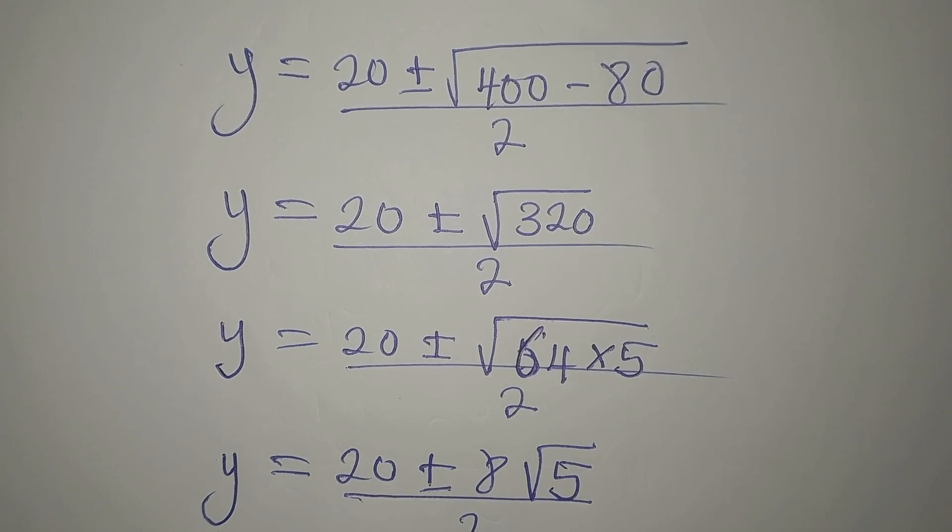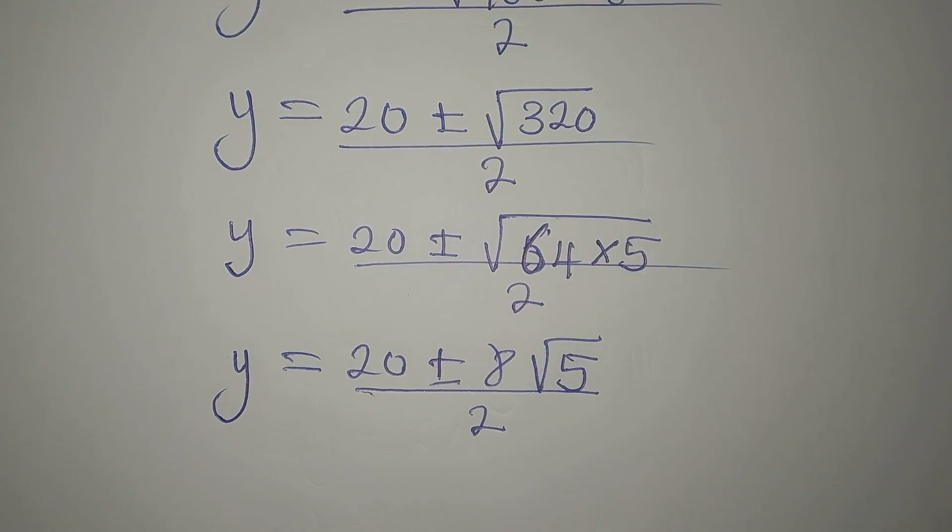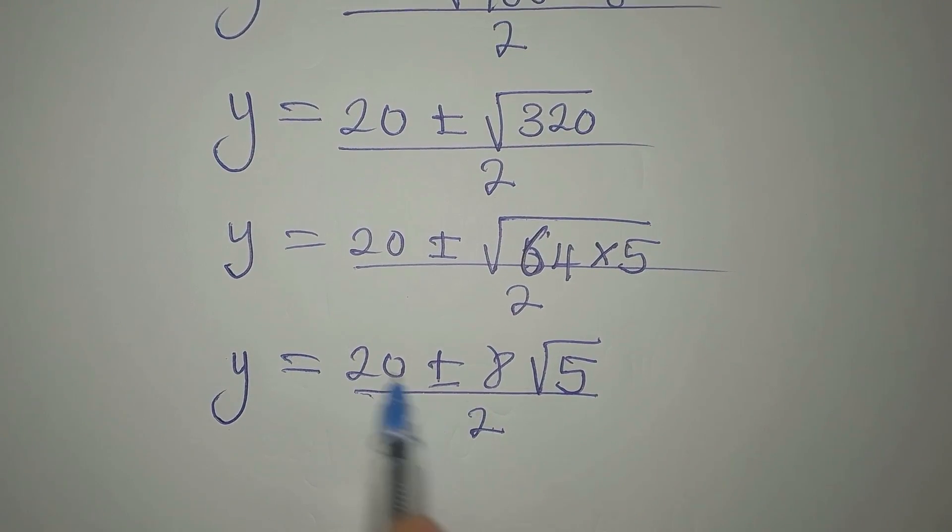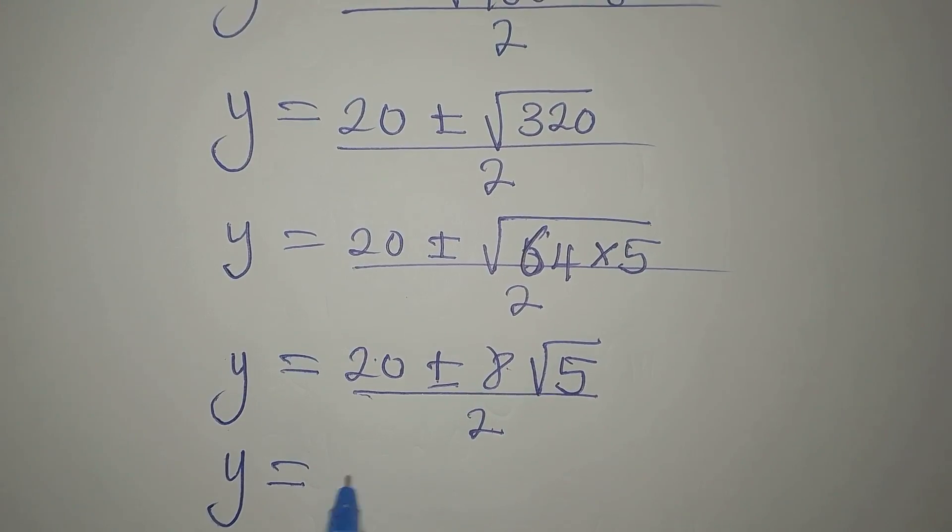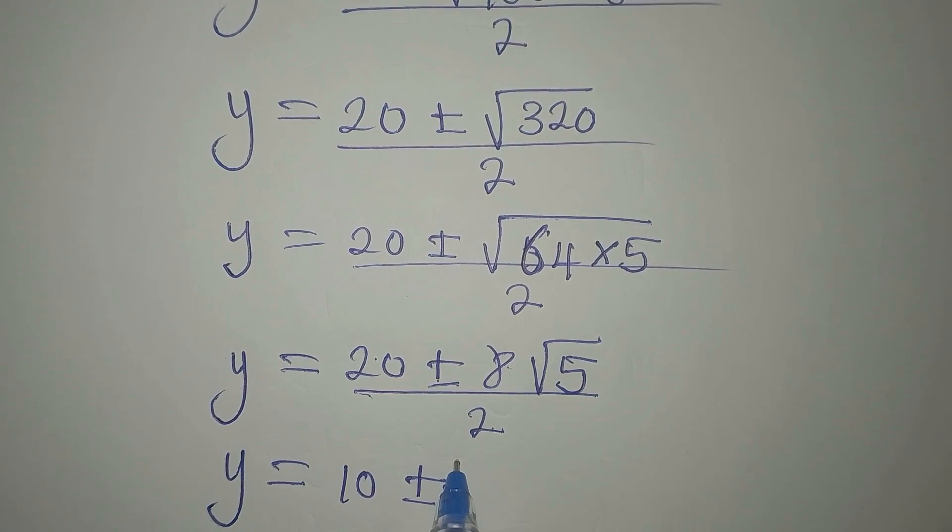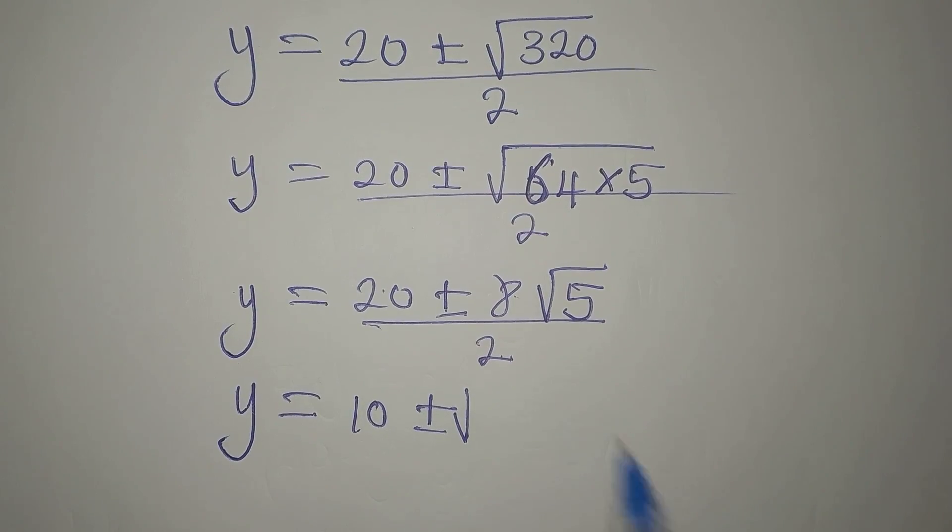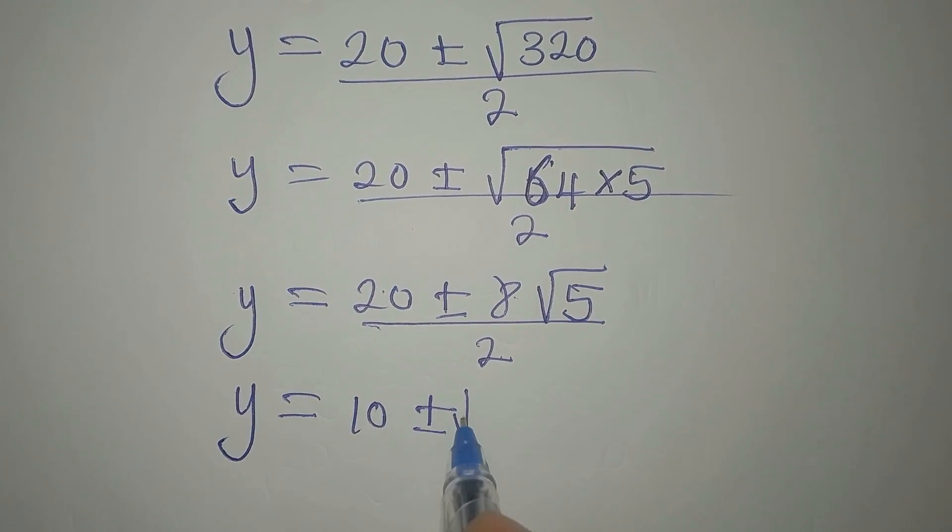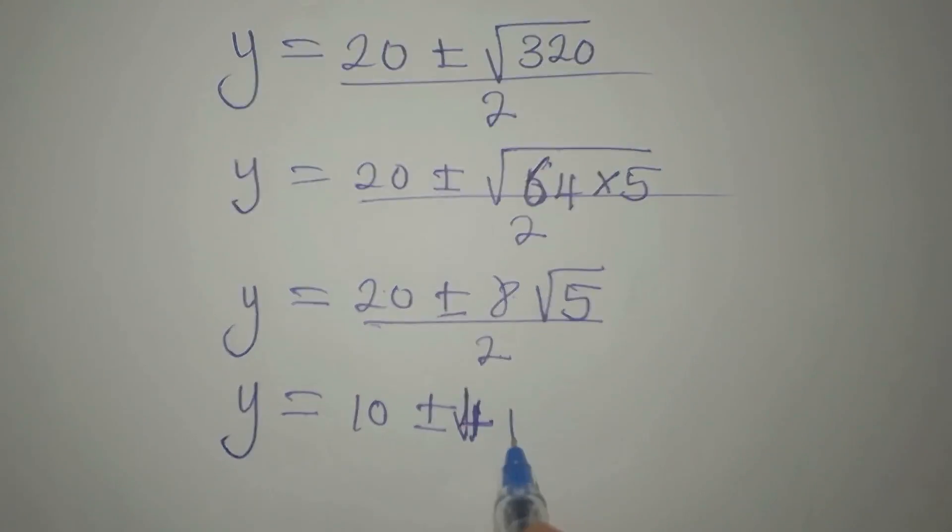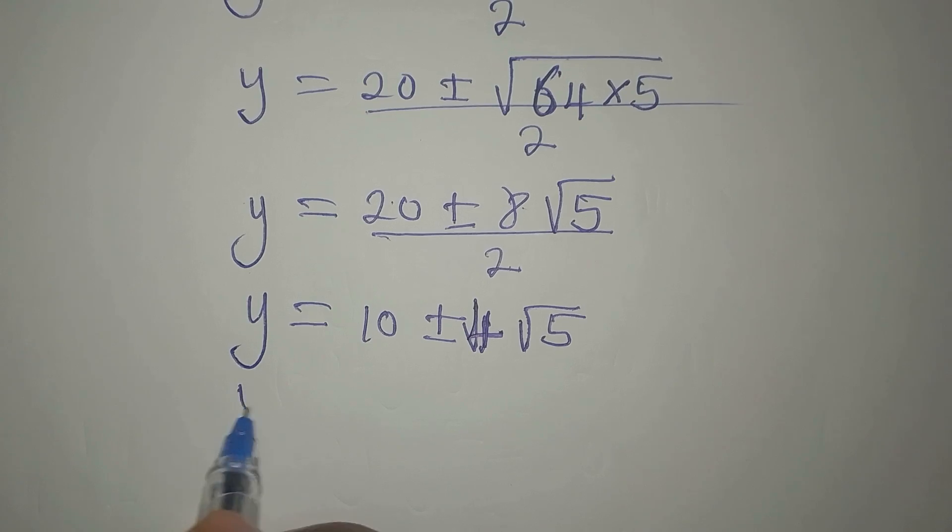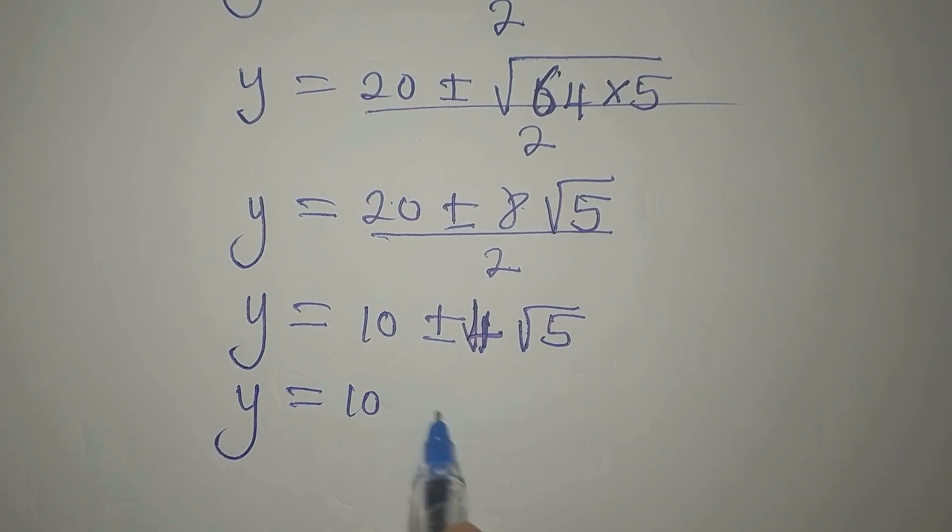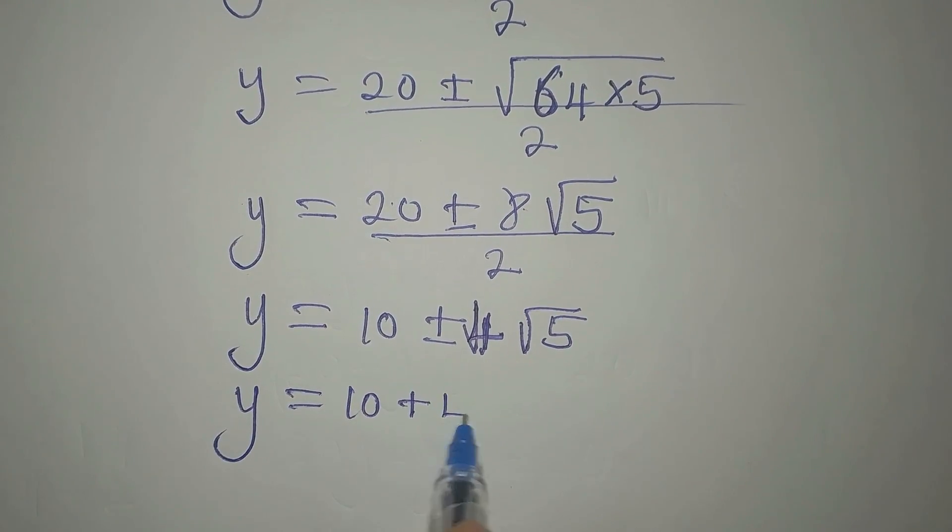Then we divide this by 2. 2 can go into 20, 2 can go there. So y now will be 2 into 20 is 10 ± (2 can go into 8, that is 4) √5. So it's either y is 10 + 4√5 or 10 - 4√5.